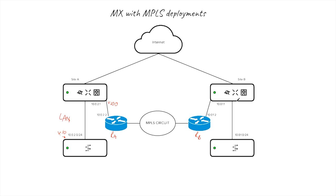On the other site, the configuration is similar. There is another LAN with VLAN 20, and another point-to-point subnet — VLAN 200 — using 10.0.1.1, 10.0.1.2, and 10.0.1.0/22. That's the configuration you might have on site B, and then we look at how to configure the MPLS circuit to make it work.